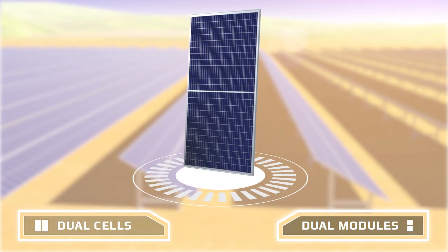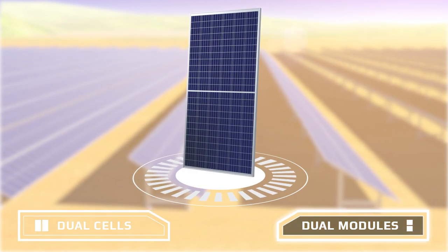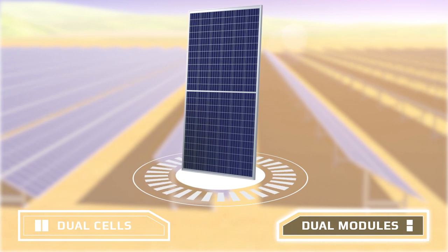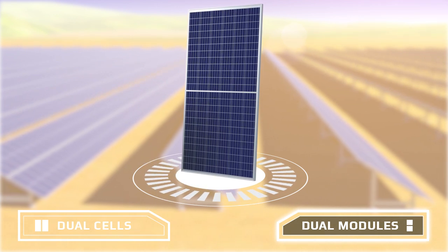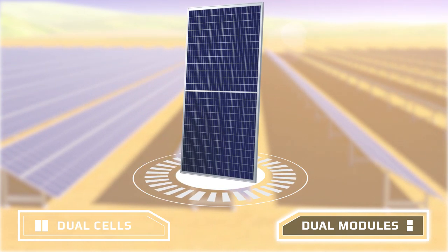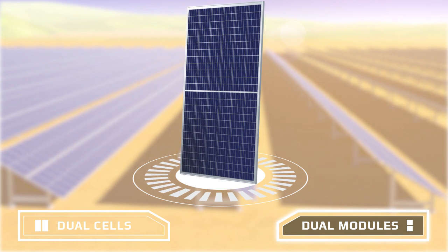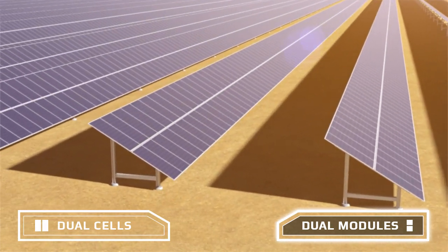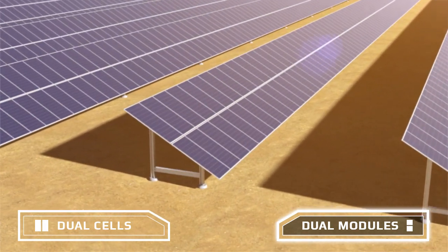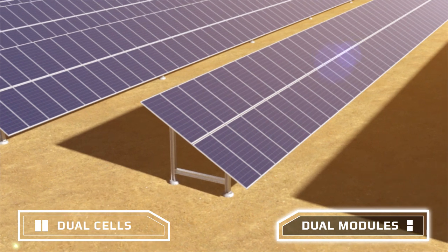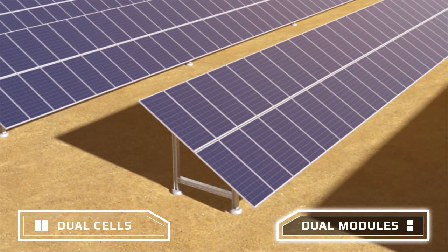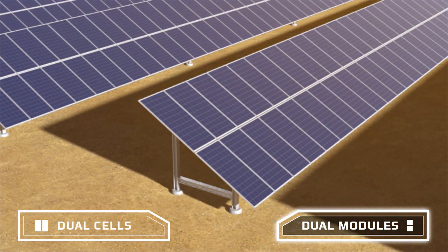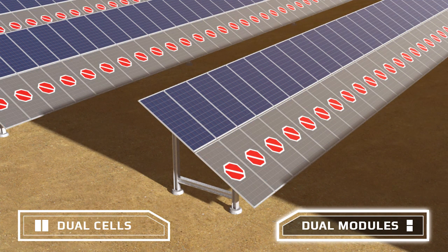Next, let's look at dual module design. KOO modules operate like two modules in one, which gives KOO modules better shading tolerance. With a standard PV module in portrait orientation, when the bottom portion of the module is shaded, the entire module stops producing.